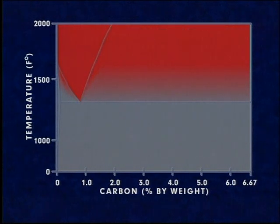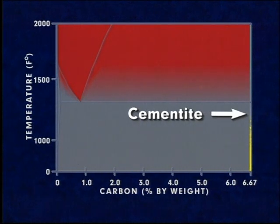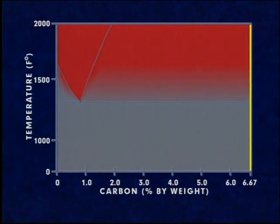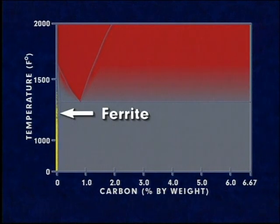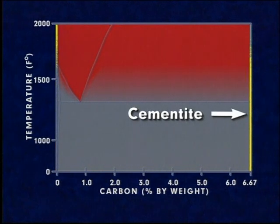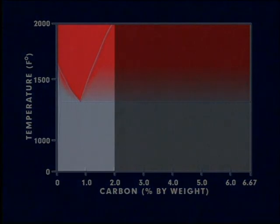The right-hand side of this iron-carbon phase diagram represents cementite, also known as iron carbide. Cementite contains 6.67 percent carbon. Though this phase diagram ranges from ferrite, with very low carbon content, to cementite, with 6.67 percent carbon, most steels contain less than 2.0 percent carbon.